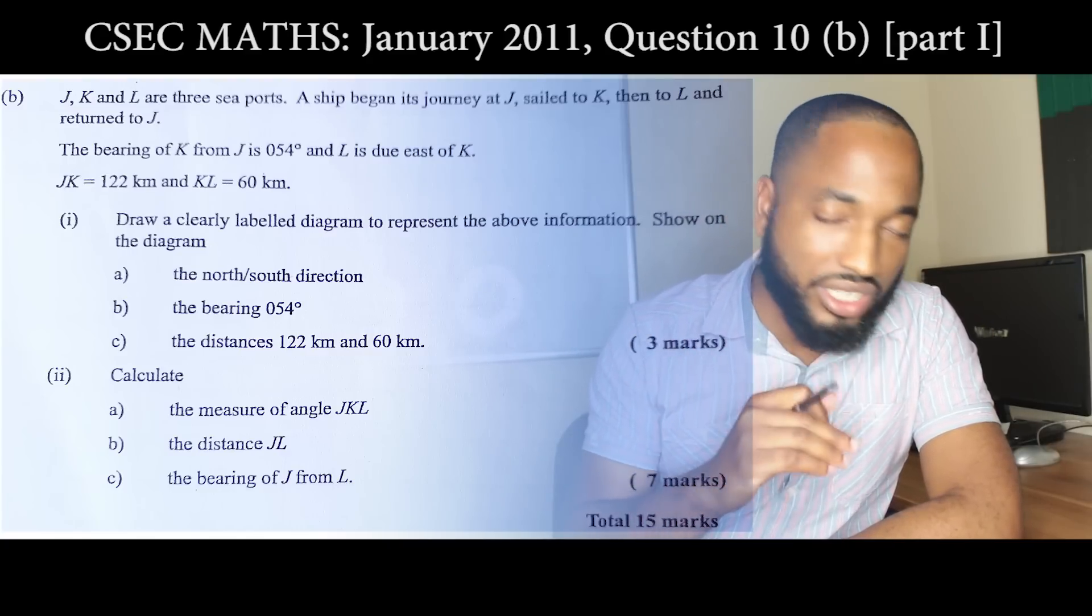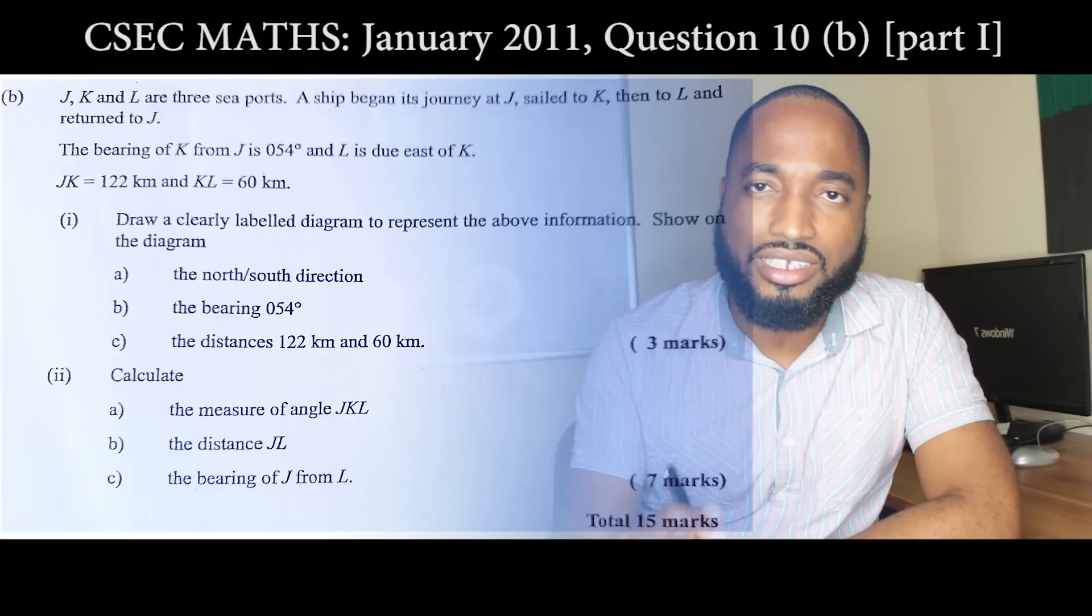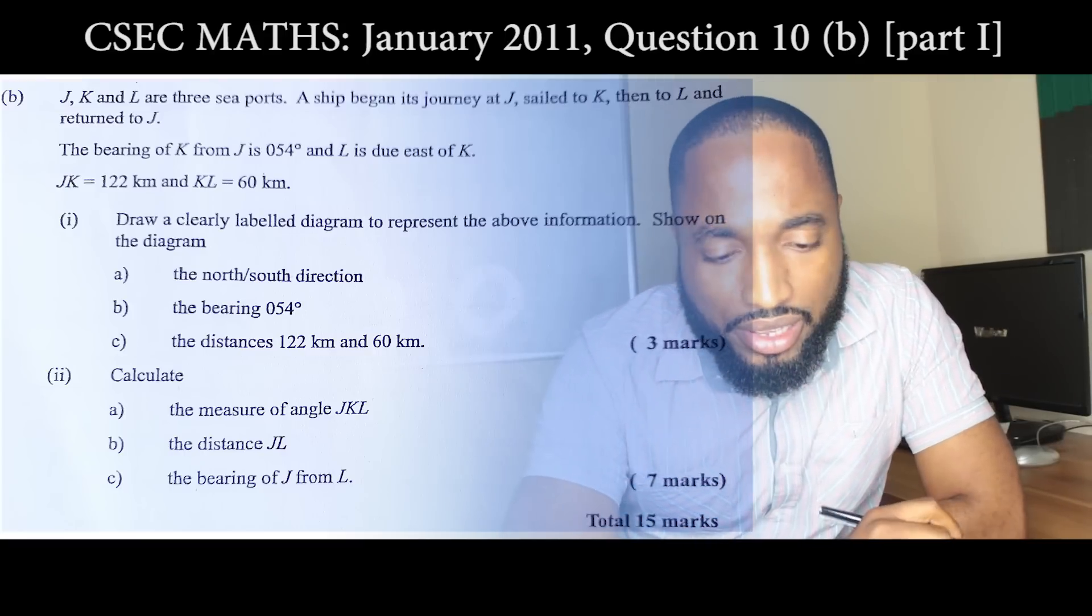We have the distances: JK is 122 kilometers and KL is 60 kilometers. So we have to create a bearing diagram for that.